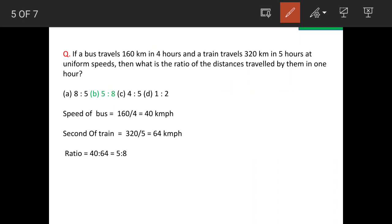The speed of the bus is 160 kilometers in 4 hours. When we divide 160 by 4 we get 40 kilometers per hour. The speed of the train is 320 kilometers in 5 hours.